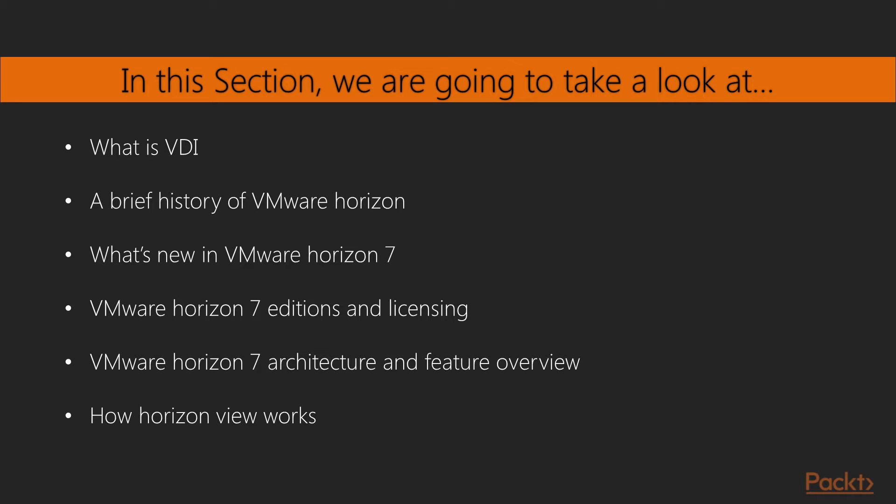We will then move on to describe the new features in this latest release of the software, and how to license the different versions that are available. Next, we're going to talk about the Horizon Architecture components and some of the key features that the solution delivers. As part of this, we will describe each of the solution components, how it works, along with discussing some of the key features that these components offer. By the end of this section, you will have gained a good understanding of Horizon View, its components, and how it works.